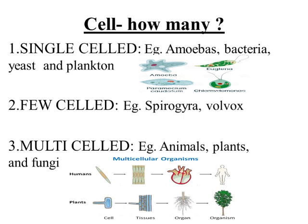First, we will discuss single-celled organisms, also known as unicellular organisms. A unicellular organism consists of a single cell, meaning all life processes such as reproduction, feeding, digestion, excretion, and circulation occur within that single cell. For example, amoeba, bacteria, planktons, and yeast belong to this category. They are typically microscopic and cannot be seen with the naked eye.